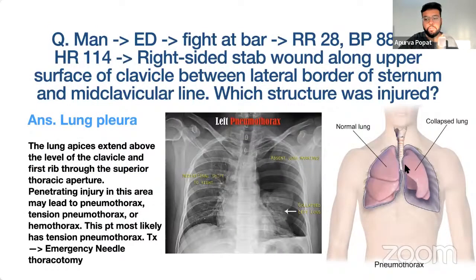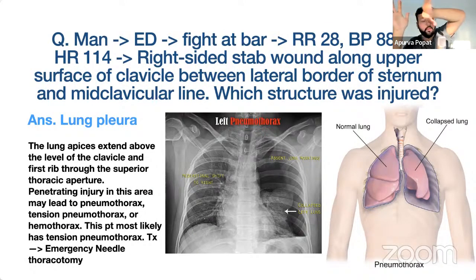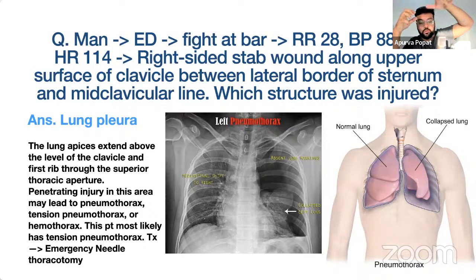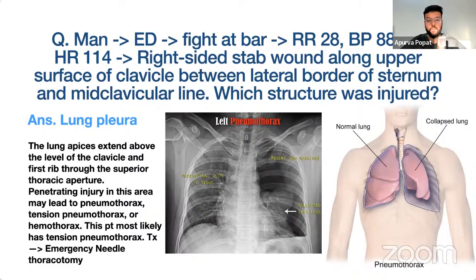In tension pneumothorax, the mediastinum shifts to the opposite side. In simple pneumothorax, the mediastinum shifts to the same side. This distinction helps guide management.